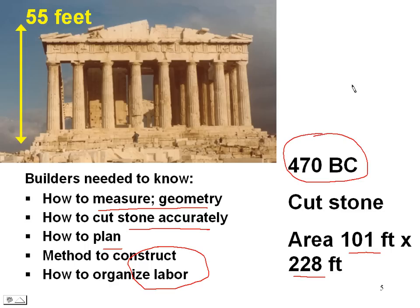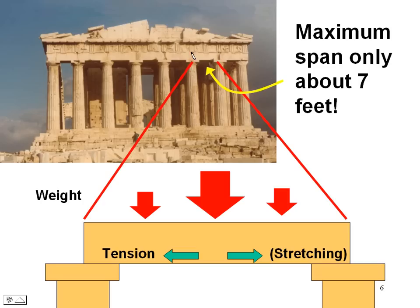Let's take a look at one member of this structure. There is a support here and a support here by a column, and then this spanning member. On one end, that spanning member rests on a column; on the other end, it rests on a column. But this is a heavy piece of stone, and gravity pulls it downward. When something solid like this is supported in this way, the force acting down on it tends to stretch the lower surface. That stretching is definitely a force — it's in tension.